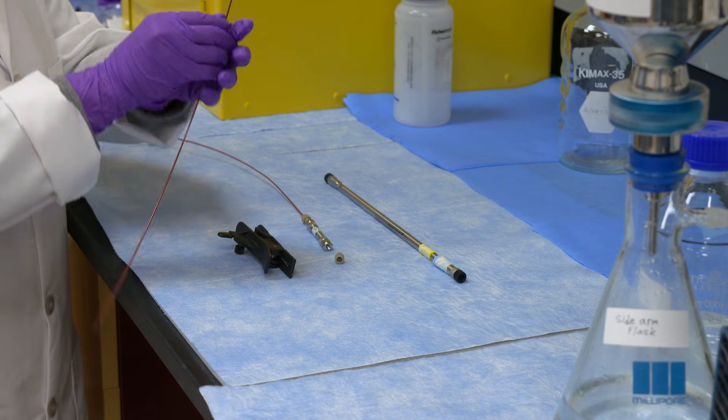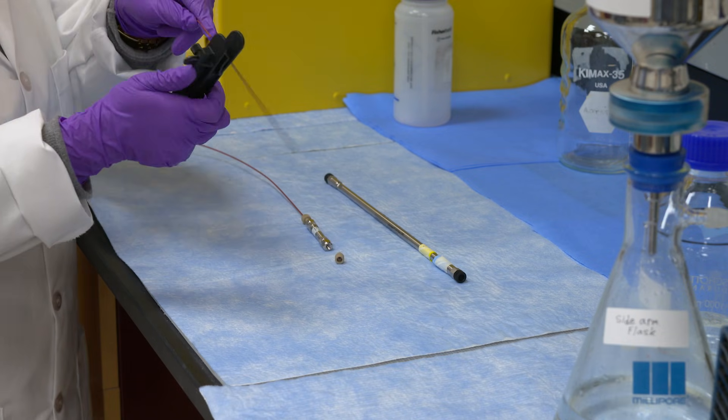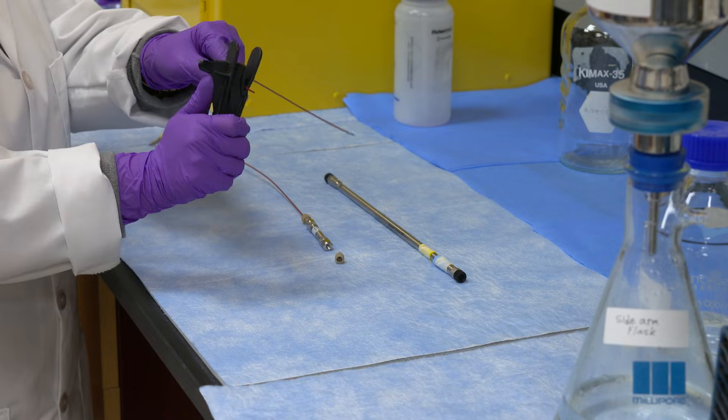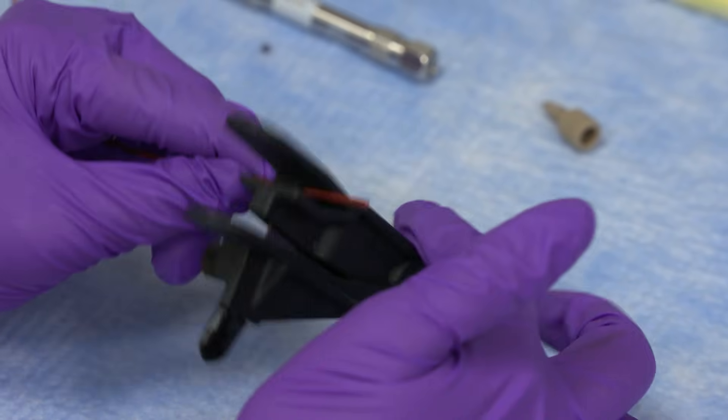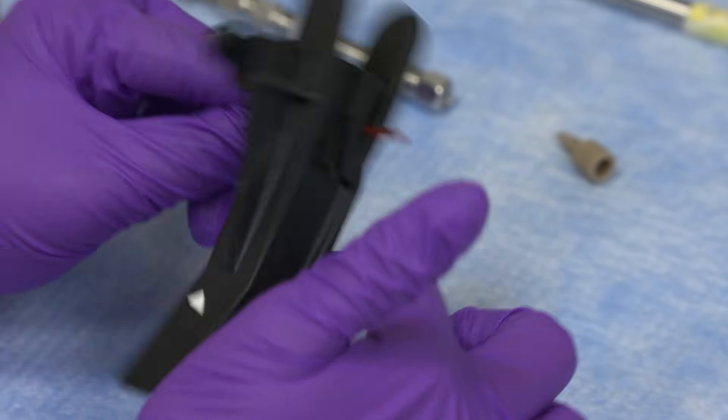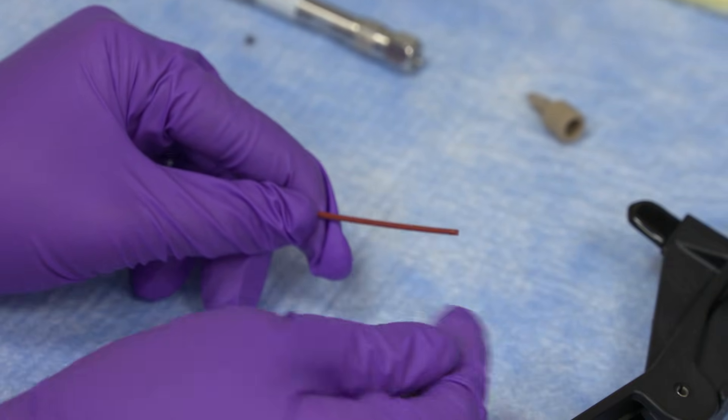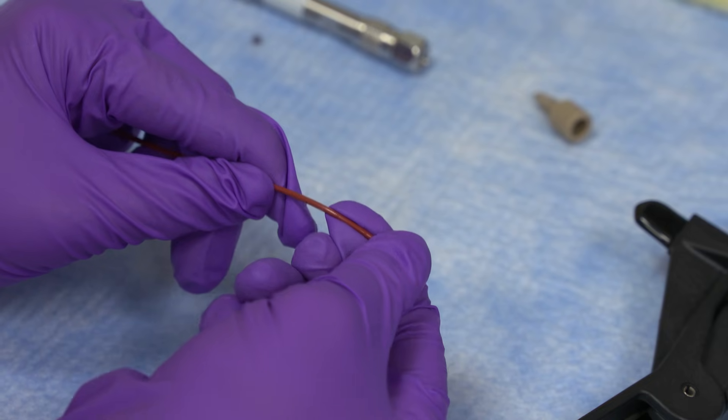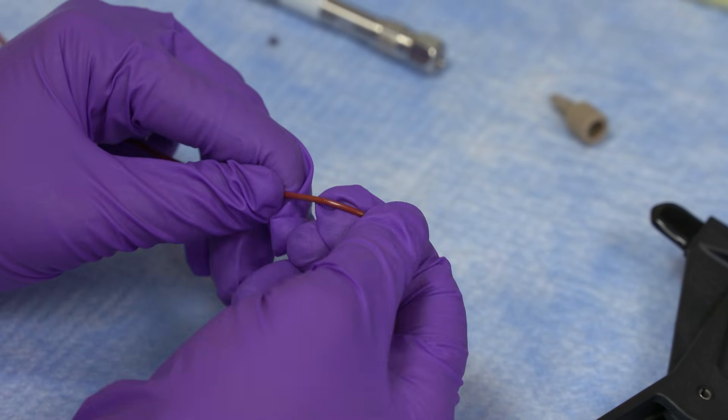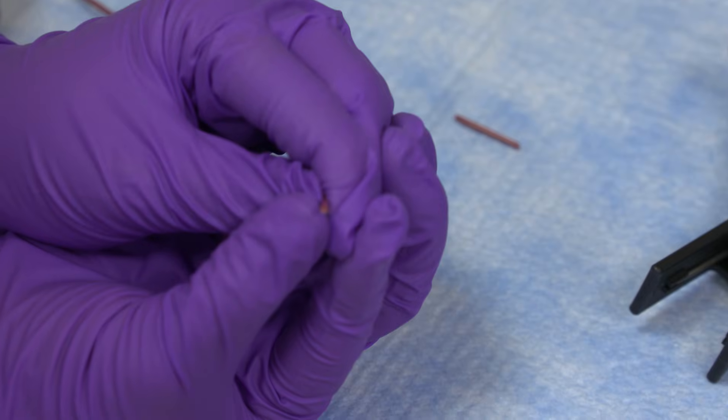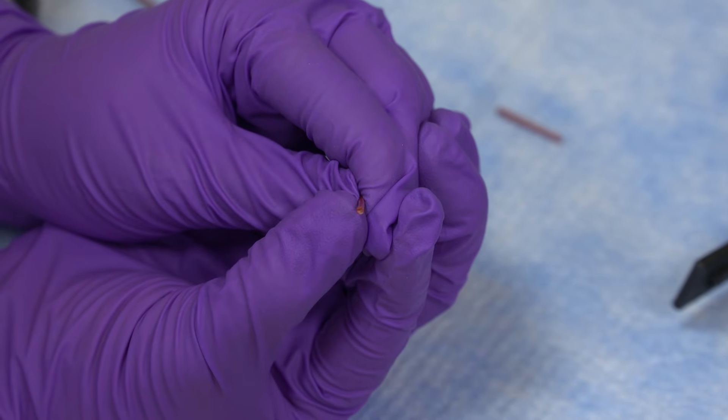You'll take your peak tubing. To cut it appropriately, you insert it in the cutter. Instead of cutting it, you spin it. Now snap the peak tubing in the site it was cut at. This gives you a nice round shape that you can insert in the ferrule.